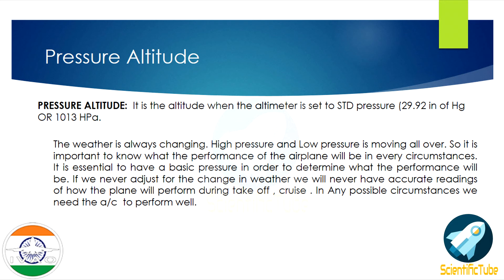Pressure altitude is the altitude when the altimeter is set to standard pressure, that is 29.92 inches of mercury or 1013 hectopascals. Now let's discuss the importance of pressure altitude.